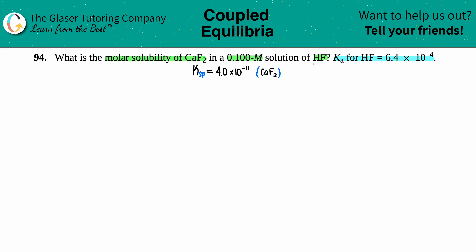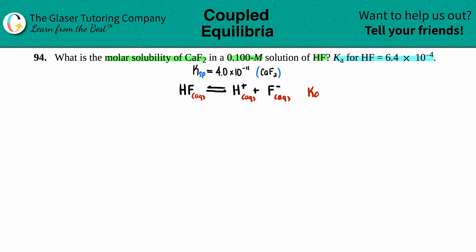In order to figure out how to use these two K values — a Ka and a Ksp — let's write the balanced equations for each. Starting with HF: since we have a Ka value, we're starting with the acid breaking down. HF comes to equilibrium with H⁺ and F⁻, all aqueous. So the Ka expression has H⁺ times F⁻ divided by HF — everything's balanced here.